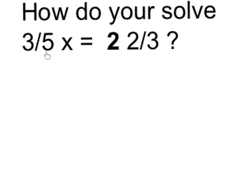If I have a fraction times some number x equals a mixed number, generally the easiest way to do that is turn that mixed number into an improper fraction. This is meant to represent 2 and 2 thirds.